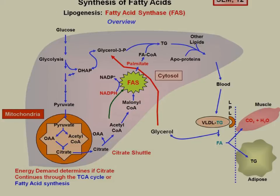In the well-fed state, glucose goes through glycolysis producing pyruvate, and the pyruvate can either go to oxaloacetate or acetyl-CoA. Since we're in the well-fed state, pyruvate dehydrogenase is going to be activated by the insulin signaling, and so we'll get the production of acetyl-CoA.